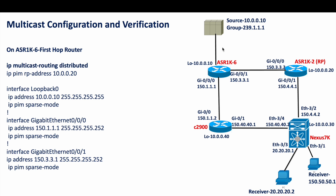In multicast terminology, the router directly connected to the source is called the first hop router. Then you have the RP router. Then the device connected to the receivers is called the last hop router — that is the terminology I am going to use in this training.